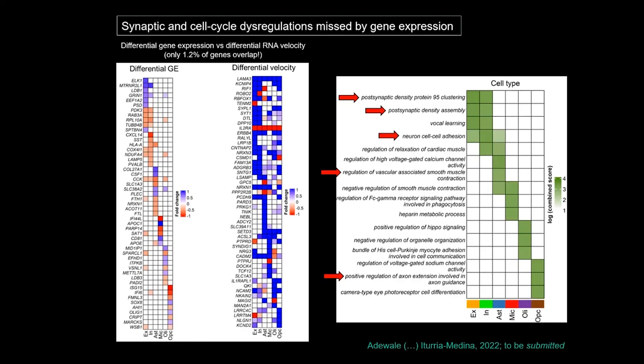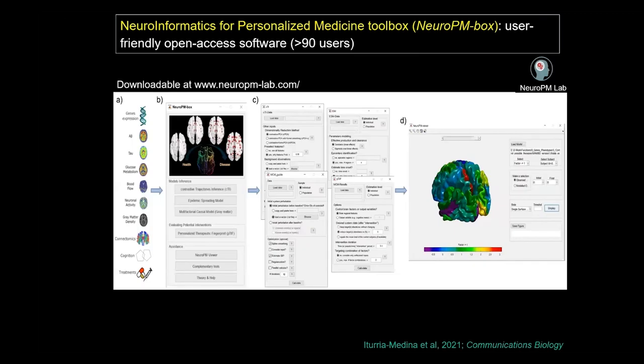Soon we will incorporate all this information into personalized models, linking deep molecular information — including RNA velocity — with neuroimaging and clinical data. Finally, most of these models are available in the European toolbox, which allows integration of gene expression, neuropathological and molecular information, neuroimaging data, and clinical information, applying all the models described today. It also allows identification and visualization of different processes across time and prediction of future time points and macroscopic alterations.